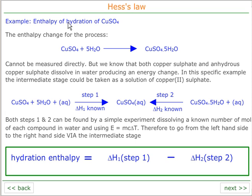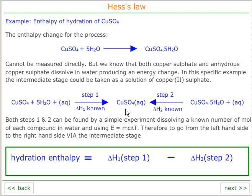If we look at an example: the enthalpy of hydration of copper sulphate. We can't measure CuSO₄ plus 5H₂O gives CuSO₄·5H₂O directly — that is, anhydrous copper sulphate and five water molecules making hydrated copper sulphate. We can't measure it directly, but we do know that both dissolve in water, so we could go via the aqueous solution. We add anhydrous copper sulphate to a large quantity of water and measure the enthalpy change, then add hydrated copper sulphate to a large quantity of water and measure that enthalpy change. We can see that going from the left-hand side to the right-hand side goes against this second arrow, so it's delta H1 minus delta H2.